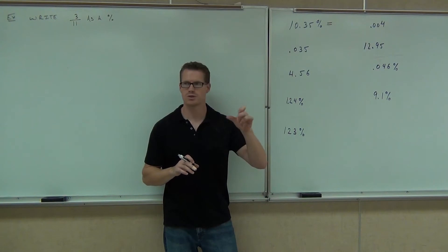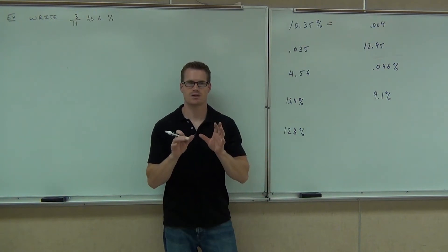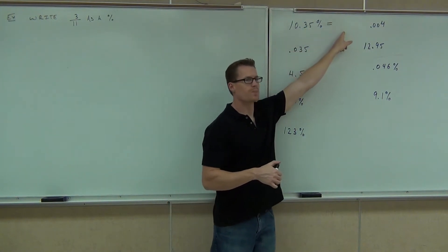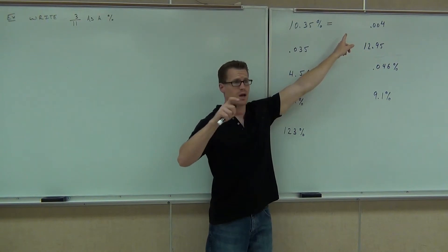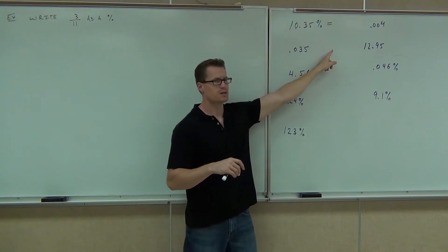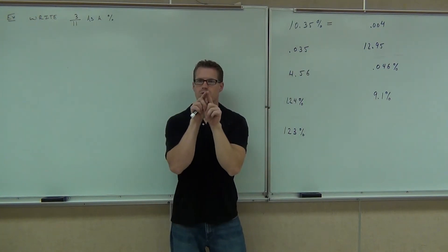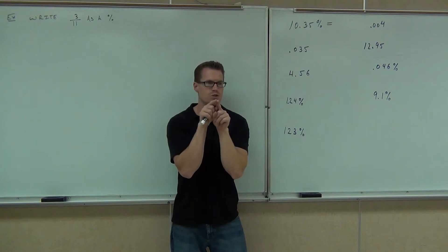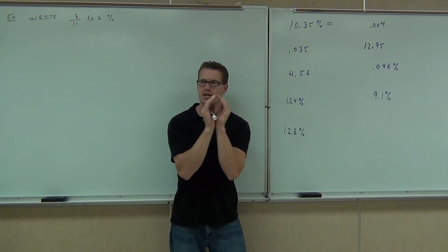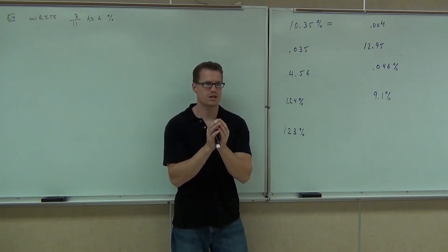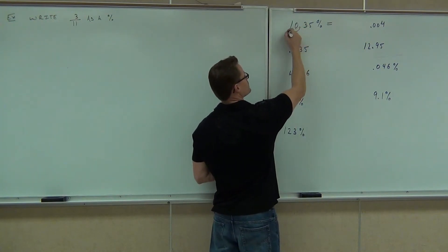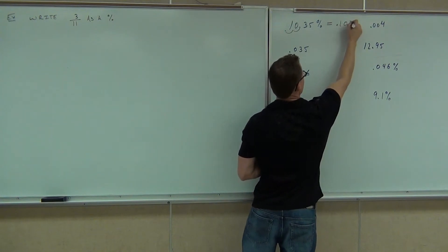A percent to a decimal — I'm moving to the left. If you're changing from a percent to a decimal, you're dividing by 100, or multiplying by 1 over 100 — it's the same thing. If you're changing from a decimal to a percent, you're multiplying by 100. It's either moving the decimal two spots left or two spots right. If you've got the percent already, you're dividing. If it doesn't have the percent, you're multiplying to get that percent. In our case, you go two spots left and you get 0.1035.